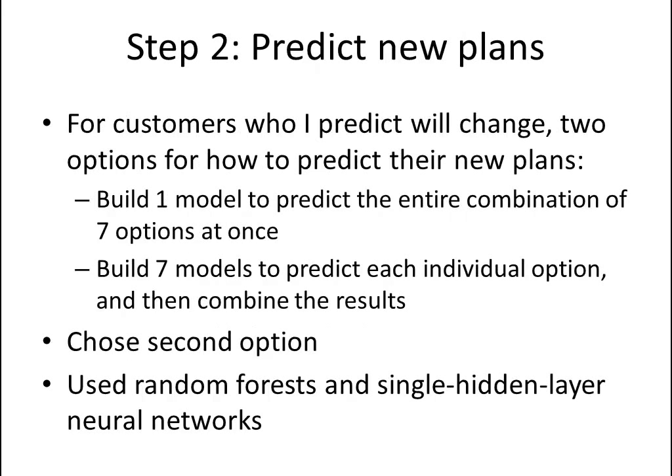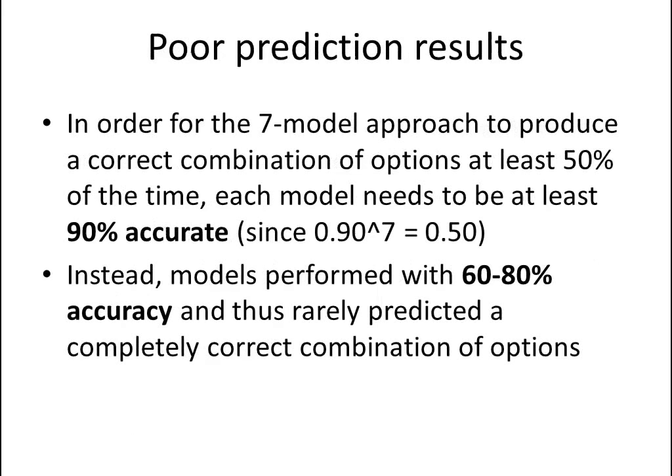The next step is to predict new plans for the customers who I predict will change. There are two options: build one model to predict the entire combination of seven options at once, or build seven different models — each predicting an individual option — and combine the results at the end. I ended up choosing the second option, using random forests and a single hidden layer neural network. Unfortunately, I had poor prediction results. For this seven-model approach to be accurate enough, each model needs to perform at about 90% accuracy, but my models were performing at 60 to 80% accuracy, and thus rarely predicted a completely correct combination.